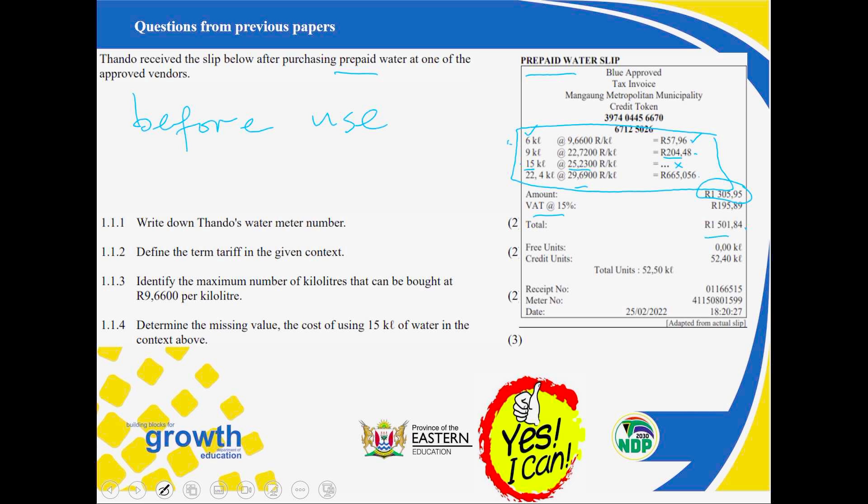We are told there are no free units, so the free units value is zero. The credit kilolitres — 52.40 kilolitres — you get by adding all four block kilolitre quantities together. In summary, you study the slip first before going to the questions, then answer them.